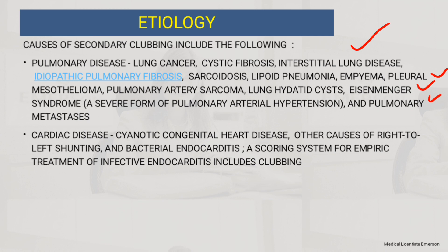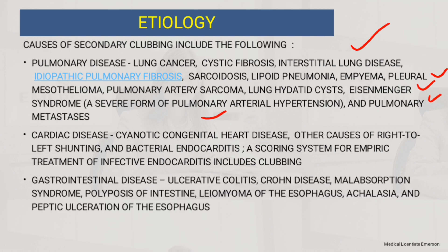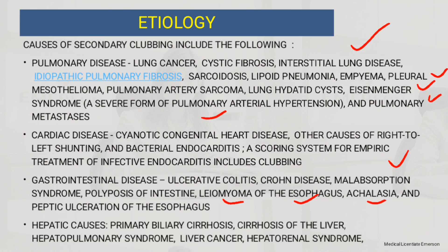Under cardiovascular causes, you can have congenital cyanotic heart disease and other causes of right-to-left shunting. You can also have bacterial endocarditis — a scoring system for empiric treatment of infective endocarditis includes clubbing. Under gastrointestinal causes, we have ulcerative colitis, Crohn's disease, malabsorption syndrome, polyposis of the intestine, leiomyoma of the esophagus, achalasia, and peptic ulceration of the esophagus. Under hepatic causes: primary biliary cirrhosis, cirrhosis of the liver, hepatopulmonary syndrome, liver cancer, and hepatitis.